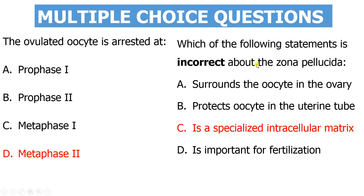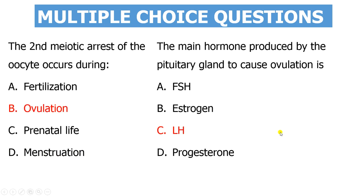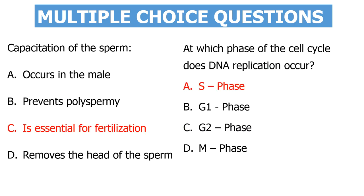The following statement is incorrect about the zona pellucida: it is a specialized intracellular matrix. Remember, it is extracellular — it is an extracellular matrix. The second meiotic arrest occurs during ovulation; once you ovulate, you complete the first meiotic division, enter the second meiotic division, and the arrest occurs at metaphase. The hormone produced by the pituitary gland to cause ovulation is luteinizing hormone. Capacitation of sperm is essential for fertilization — capacitation is the removal of the glycoprotein coat from the head of the sperm, which reveals the receptors that target the ovum.